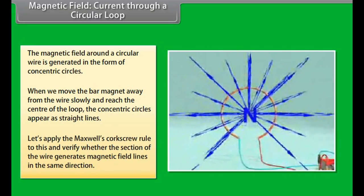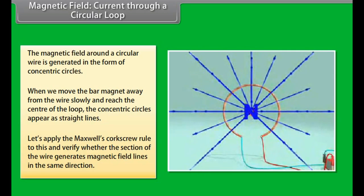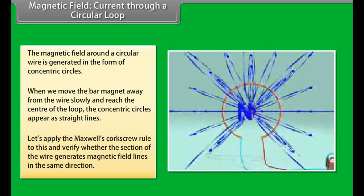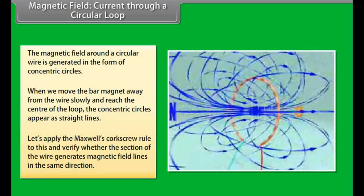Now try applying Maxwell's Corkscrew Rule to this and check whether every section of the wire is able to generate magnetic field lines in the same direction.